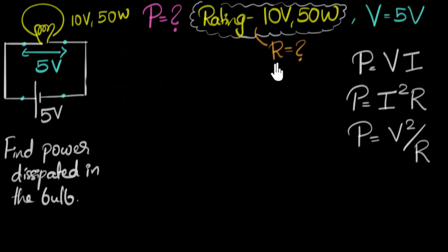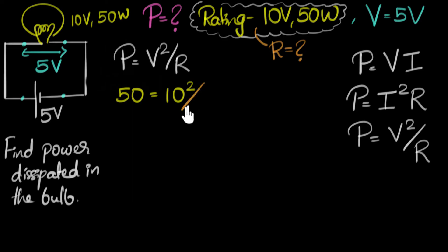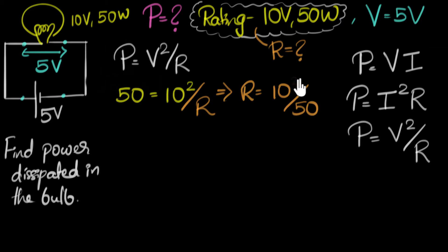We want power, voltage, and resistance, so let's use P equals V squared over R to figure out the resistance of the bulb. Substituting: if the power is 50 watts when the voltage is 10 volts, then 50 equals 10 squared over R, so R equals 10 squared divided by 50, which is 100 divided by 50. From this, we know the resistance of this bulb is 2 ohms.